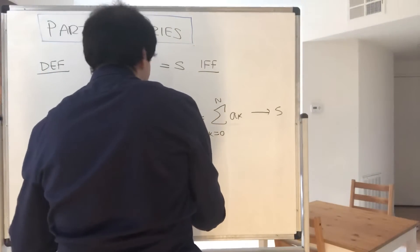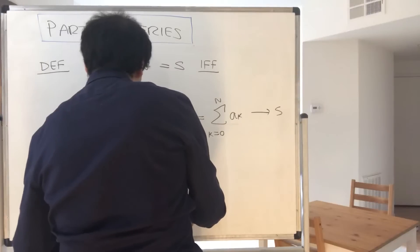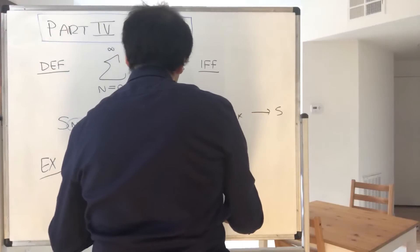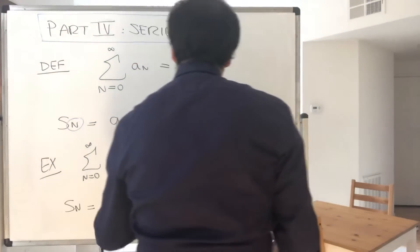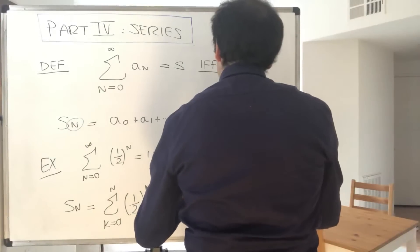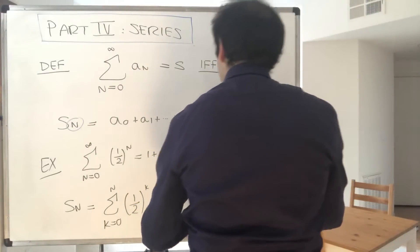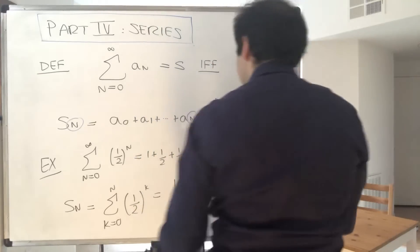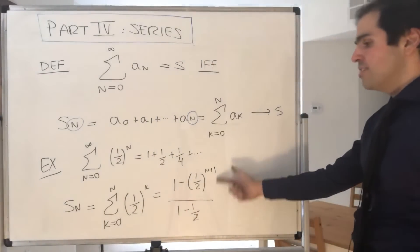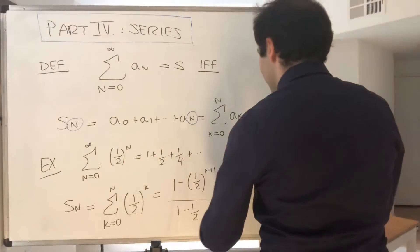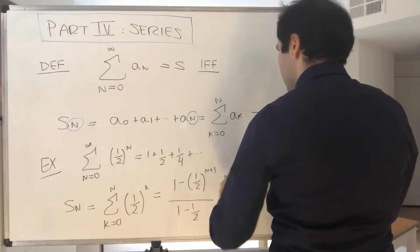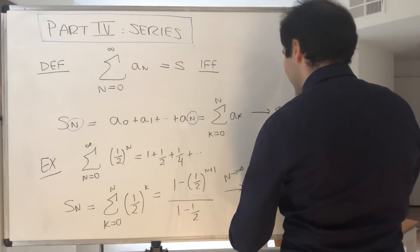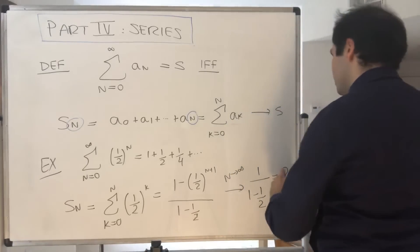So, S_n, which is the sum from k=0 to n of (1/2)^k, which is 1 - (1/2)^(n+1). So, you can explicitly calculate that. And now, the question is, what happens to this sequence if you let n go to infinity? Well, this becomes 1 - 0, so 1/(1 - 1/2), which gives you 2.